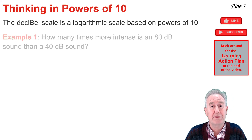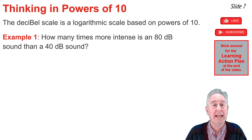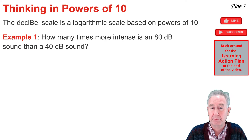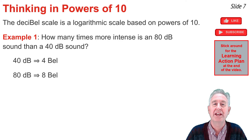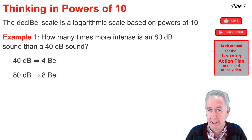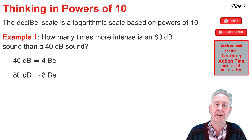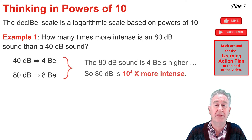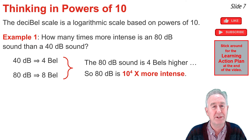Example one: how many times more intense is an 80 decibel sound than a 40 decibel sound? Converting to bells: 40 decibels equals 4 bells, and 80 decibels equals 8 bells. The 40 dB sound is 10⁴ times more intense than the threshold of hearing, and the 80 dB sound is 10⁸ times more intense. Therefore, the 80 dB sound is 10⁴ times more intense than the 40 dB sound.